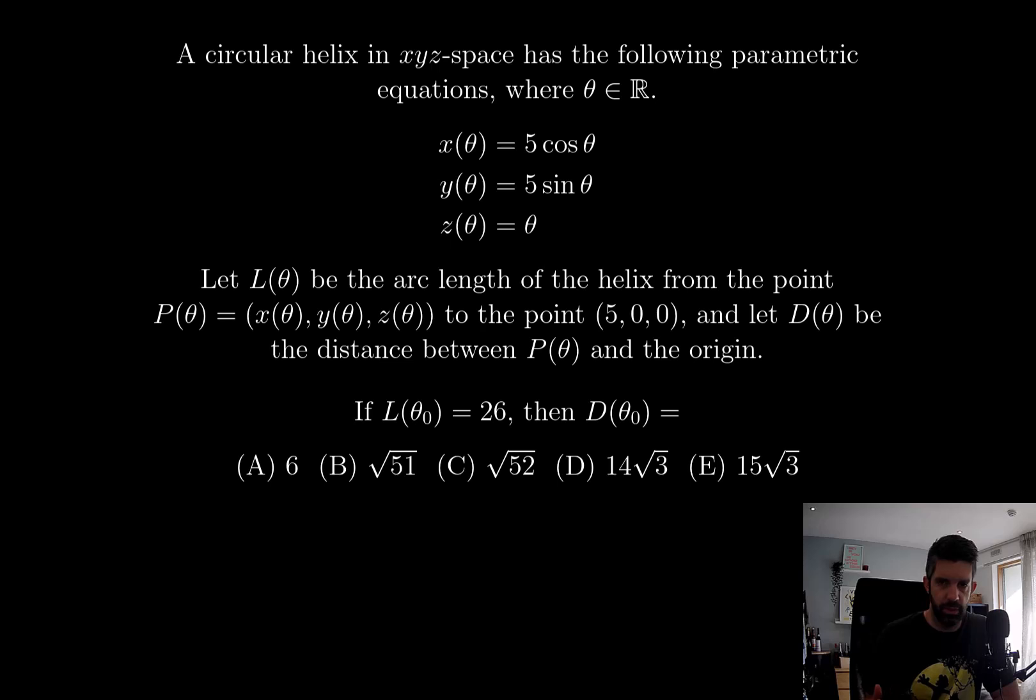I think all we really need to do here is write out what the formulas are for L theta and D theta, solve for when L theta is equal to 26, and then use that to compute D theta. I don't know if there is a nice convenient expression for the arc length of a helix, so I might just derive it.